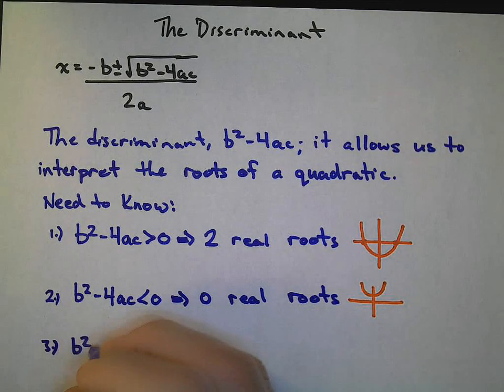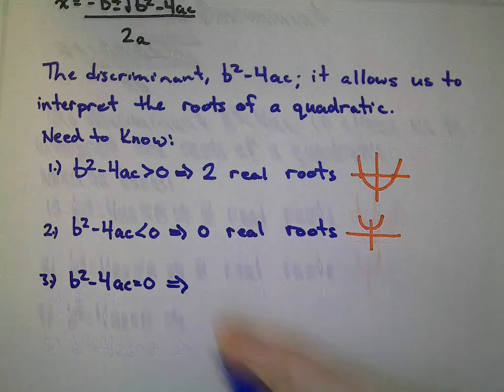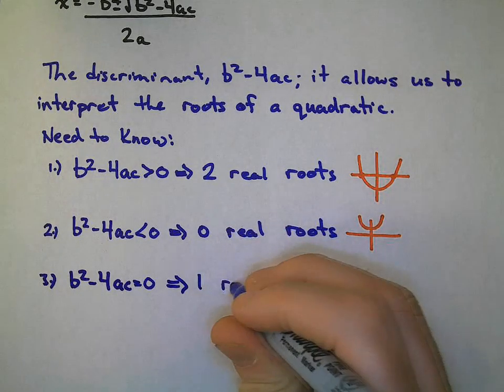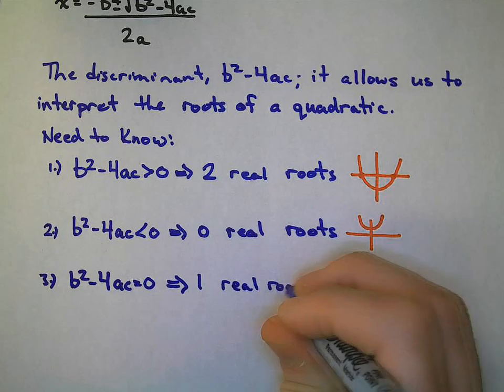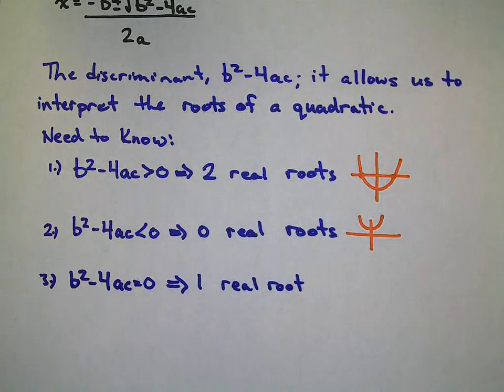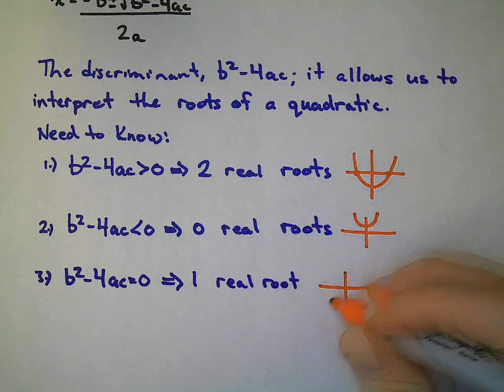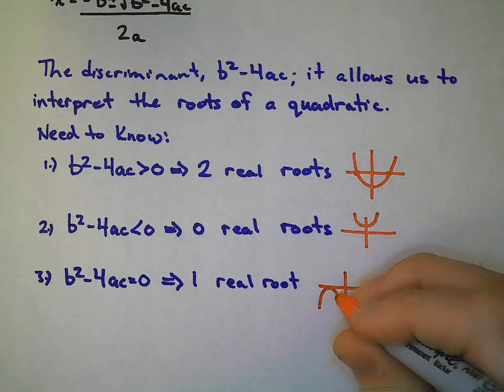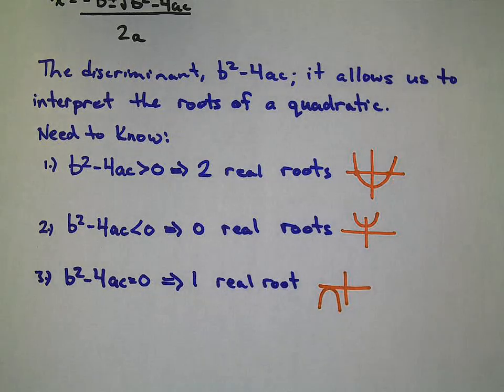Third, what happens if b squared minus 4ac is exactly equal to 0? What that means is we will have one real root. And that is the case where our vertex is the only part that is touching the x-axis.